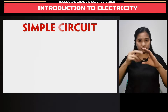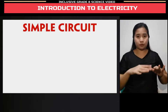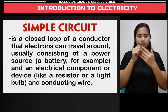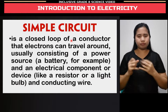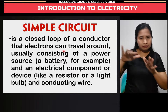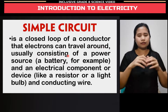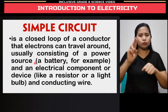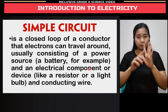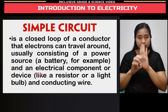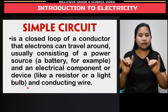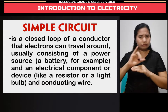The flow of electrons can be seen in a simple circuit. A simple circuit is a closed loop of a conductor that electrons can travel around, usually consisting of a power source — a battery, for example — and an electrical component or device, like a resistor or a light bulb, and conducting wire.